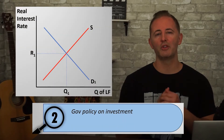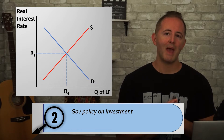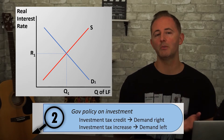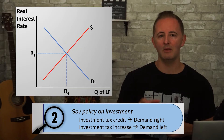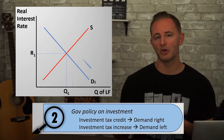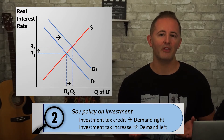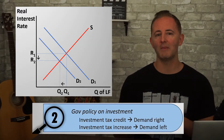The other reason demand shifts has to do with government policy on investment. If the government passes an investment tax credit, it essentially makes it cheaper to borrow money by reducing the taxes a business owes, so the demand for loanable funds increases and shifts to the right. On the other hand, if that tax credit is removed or taxes on investment income are raised, this will shift the demand for loanable funds to the left.